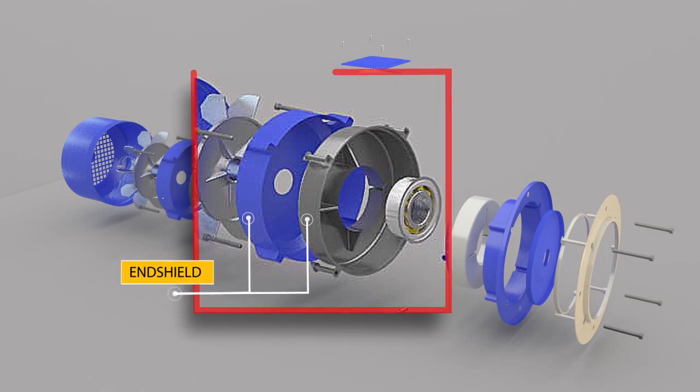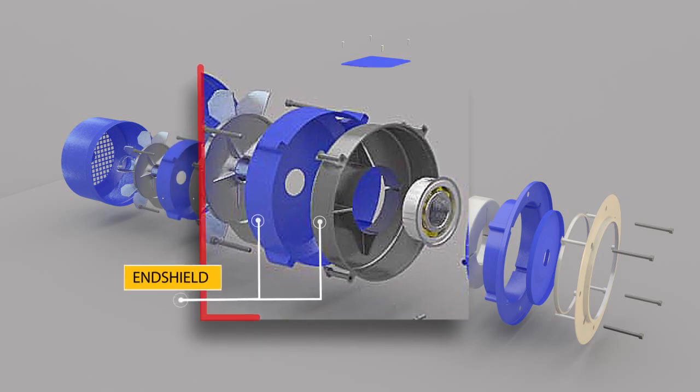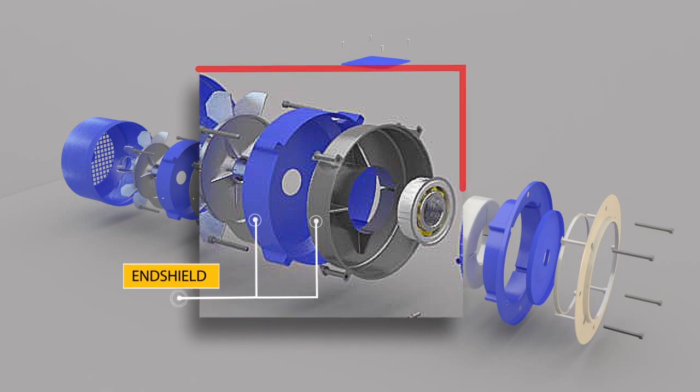End shield is part of the motor housing which supports the bearing and acts as a protective guard to the electrical and rotating parts inside the motor. This is frequently called the end bracket or the end bell.